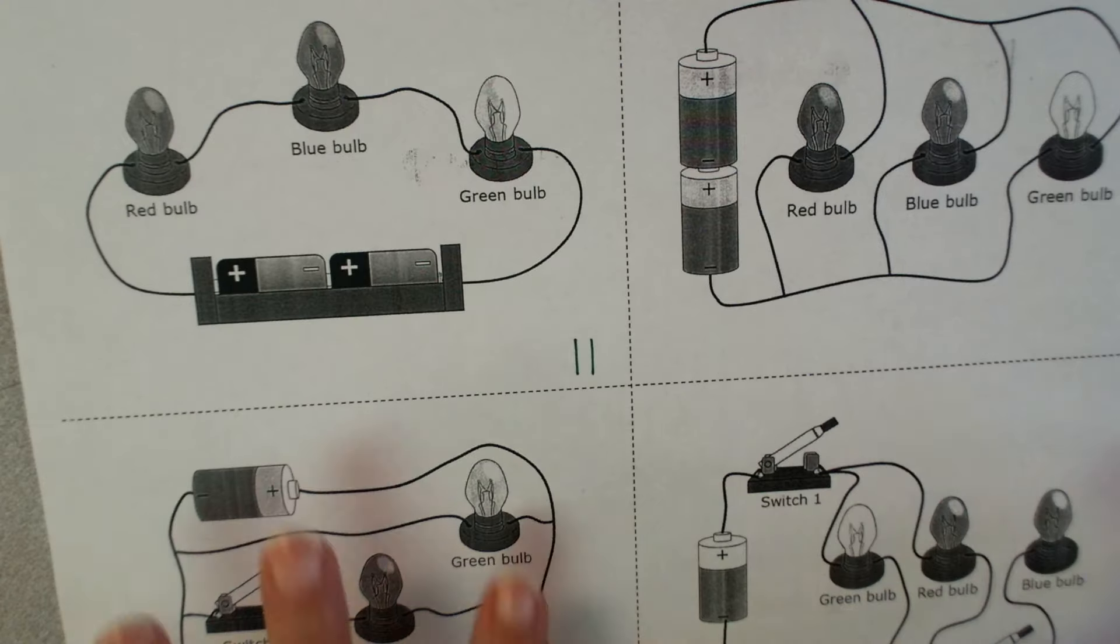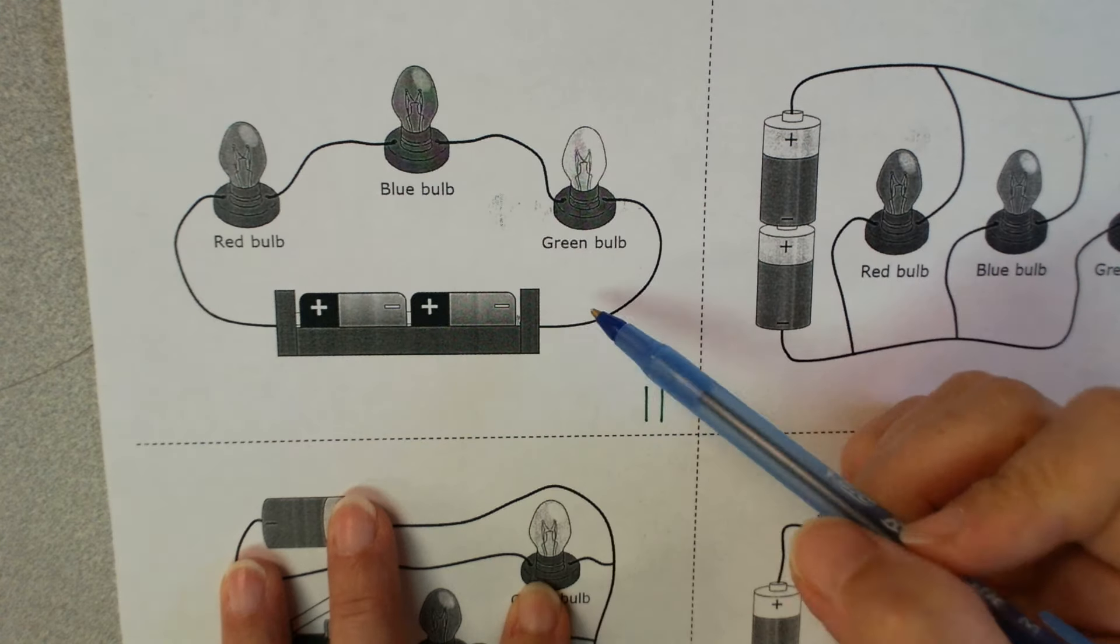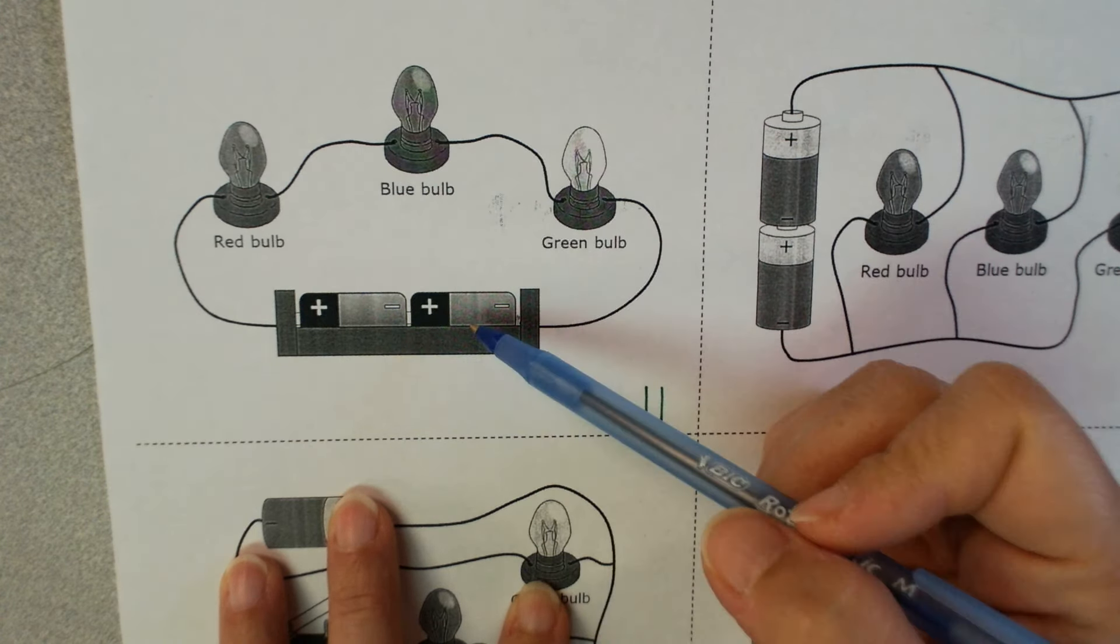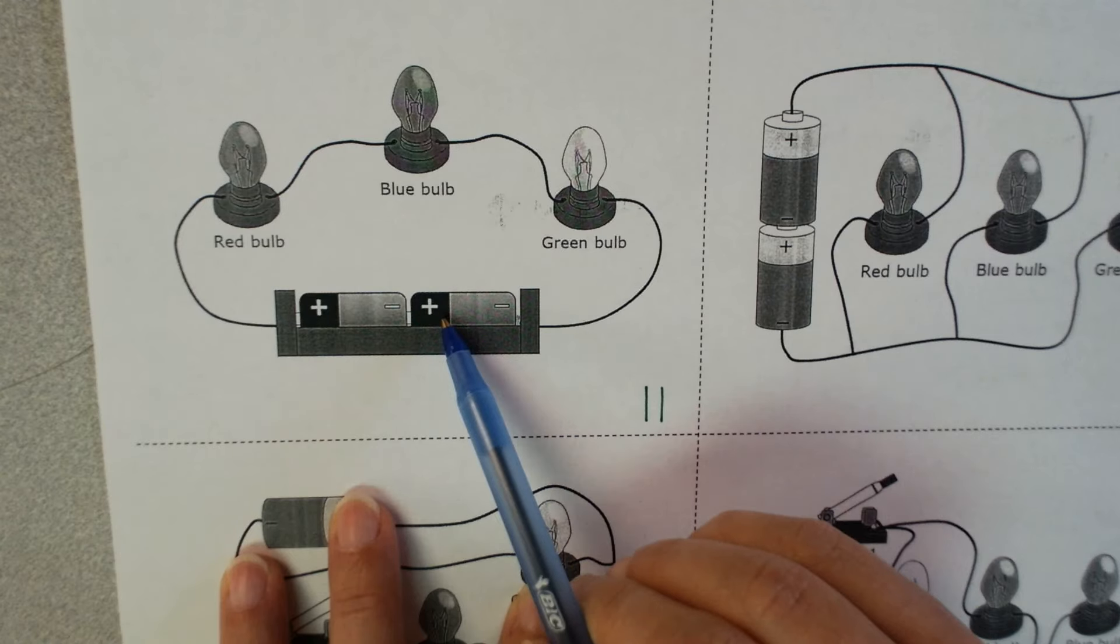So let me show you some examples. So in this first one, I want you to ask yourself, is this series or is it parallel? I just see one loop, so that would be series. I've got my batteries. They must be, if you have more than one battery, they must be connected positive to negative.